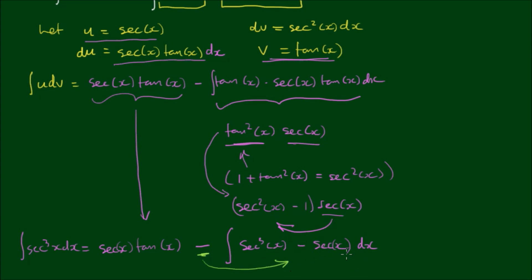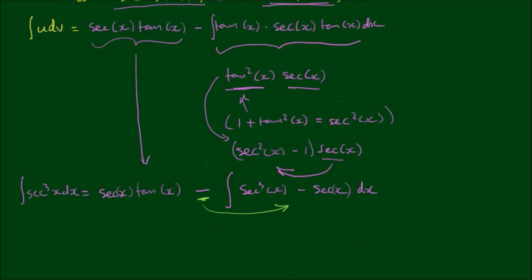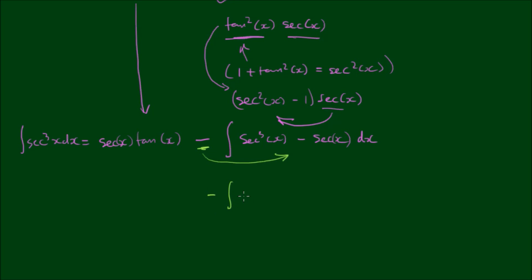And make this into two integrals. So this becomes minus the integral of sec³(x) plus the integral of sec(x) dx. And the front term remains.